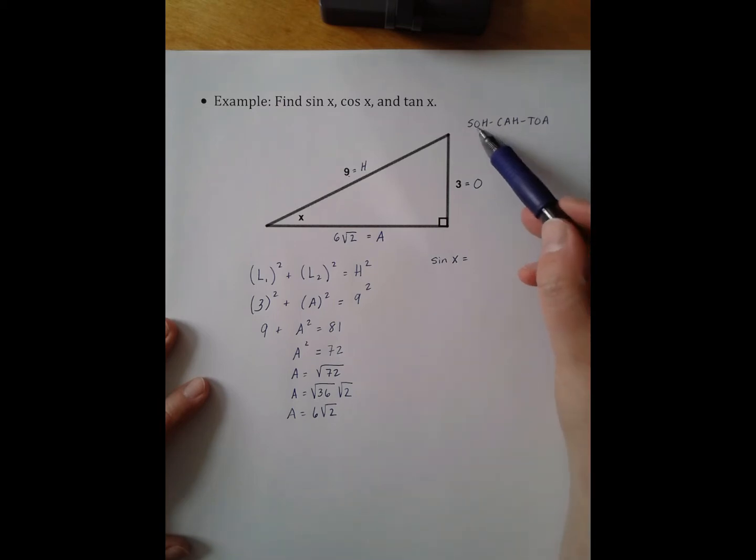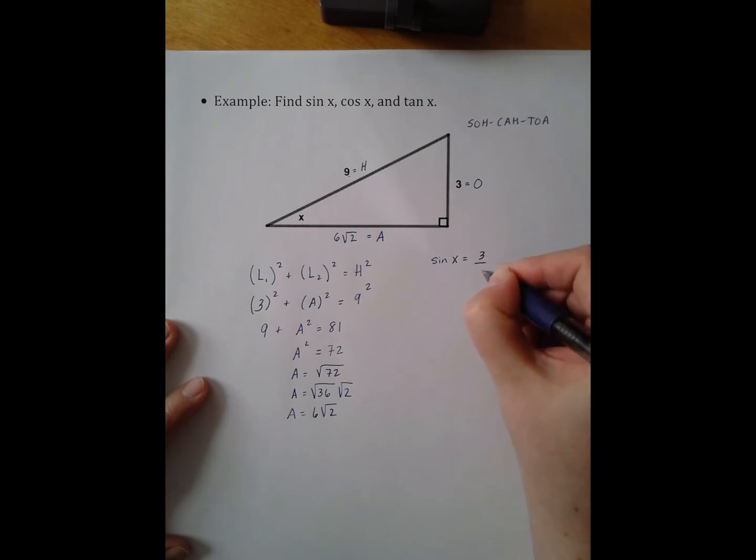So I'm looking at the opposite over hypotenuse. So the opposite over hypotenuse, which can simplify to be one third.